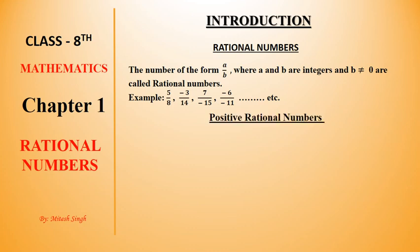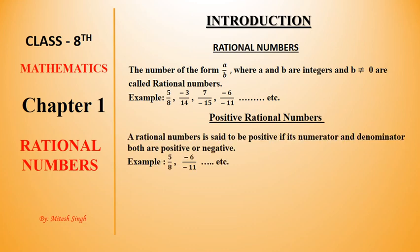The next point: Positive Rational Numbers. Definition: A rational number is said to be positive if its numerator and denominator both are positive or both are negative. I can see some examples.